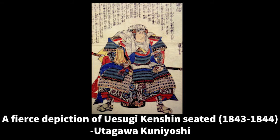Hello inventors, today I'm going to be showing you a portrait that I made, and it has a story. I drew a lot of inspiration from the artist Utagawa Kuniyoshi. One of his artworks is called 'A Fierce Depiction of Uesugi Kenshin Seated,' made in either 1843 or 1844 — about 200 years ago. I think it's pretty neat that even 200 years later we still know the story of Uesugi Kenshin because Kuniyoshi drew and painted him.